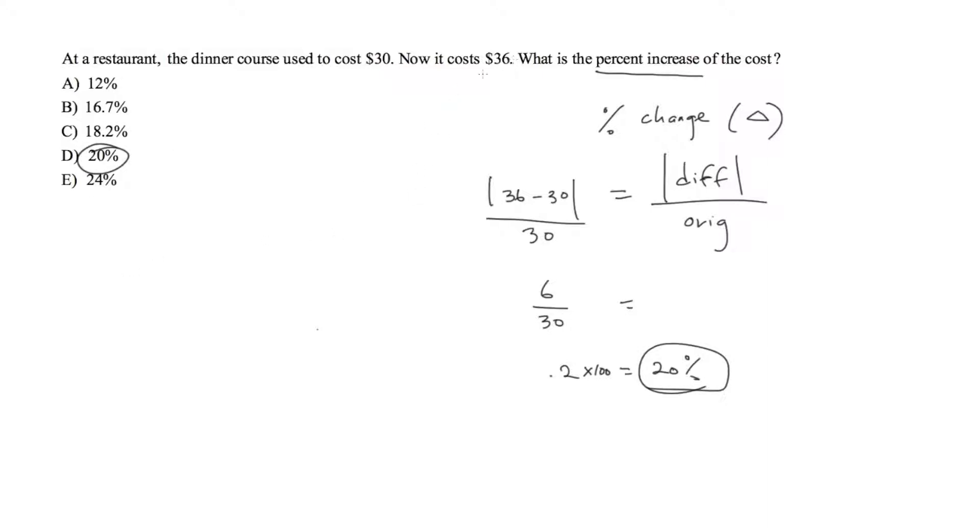now with some coupon the dinner costs $30, what would the percent decrease of this dinner cost? So in that case you would have 36 minus 30.